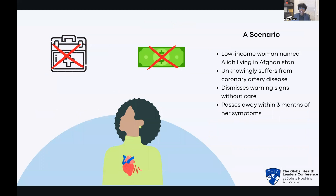Before we dive into the topic, I'd like to set the stage with a scenario. Imagine a middle-aged woman named Alia living in Afghanistan. Alia has a low-income job, and thus she often restricts her diet to cheaper foods, some of which happen to be very high in saturated fat, a big contributor to coronary artery disease. Over time, the physical and nutritional stress that she puts on her body begins to show symptoms of the disease. She dismisses the chest pain as heartburn and something trivial. Eventually, she passes away due to not seeing a doctor or working to overcome her condition.